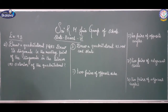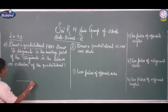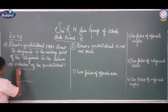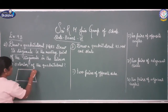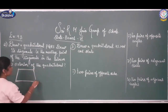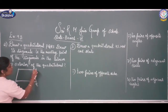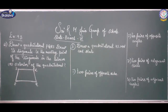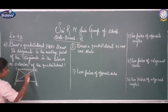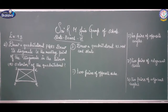Draw a quadrilateral P, Q, R, S and draw its diagonals. The first step - I am going to draw a quadrilateral. So this is my quadrilateral. I am marking P, Q, R, S. After drawing this quadrilateral I am going to draw the diagonals. P-R and S-Q are the 2 diagonals of the quadrilateral.